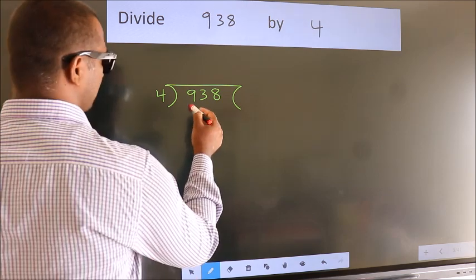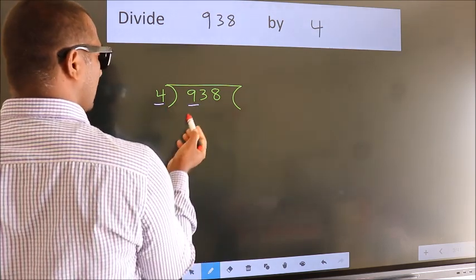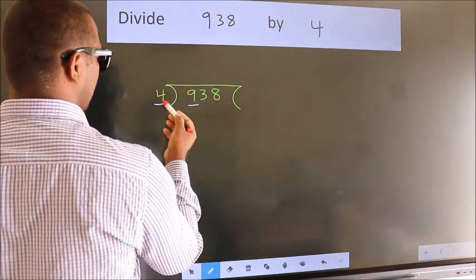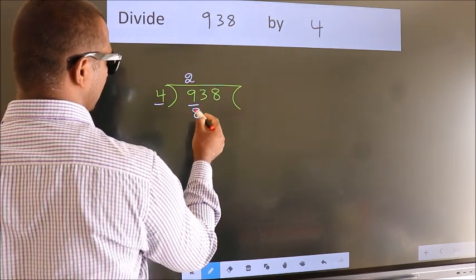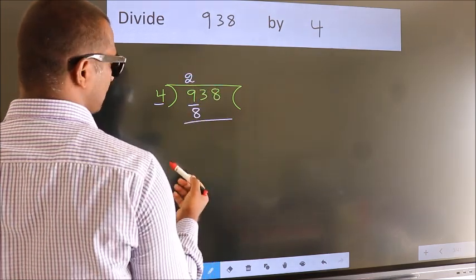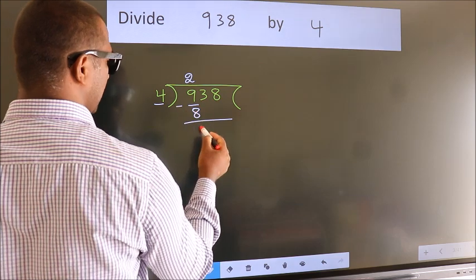Here we have 9, here 4. A number close to 9 in the 4 table is 4 2s 8. Now we should subtract. We get 1.